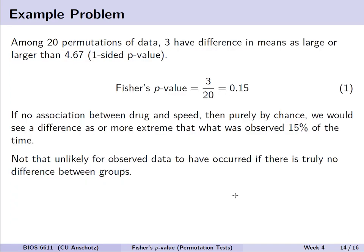So, among those 20 permutations of data, we have those three that have a difference in means as large or larger than 4.67. So, with our calculation, we would take 3 divided by 20 and say that we have a p-value of 0.15. The nice thing about Fisher's p-value is it's a bit more intuitive to interpret, because we're making this assumption that by shuffling everything up, we have this permutation null distribution. So, in other words, if there's no association between drug and speed you complete the maze, then purely by chance we would see a difference as or more extreme than what we observed 15% of the time. Really, if we're going back to what we might have seen already in practice, a p-value of less than 0.05 being arbitrarily considered significant, we would conclude that it's actually not that unlikely for the observed data to have occurred if there truly is no difference between the groups.